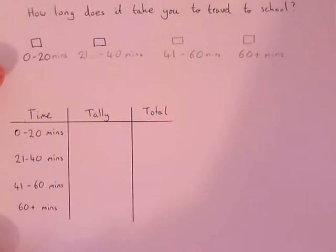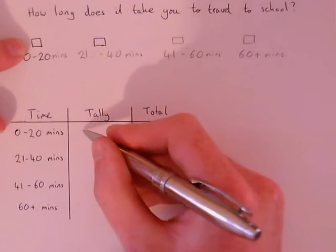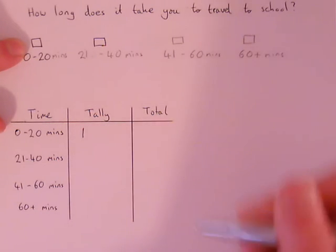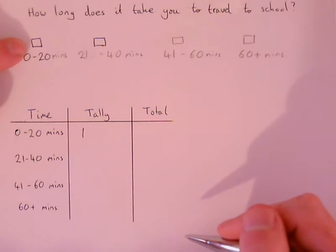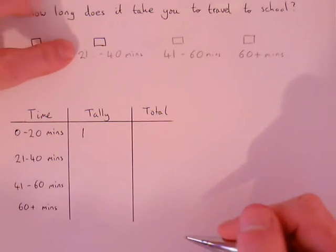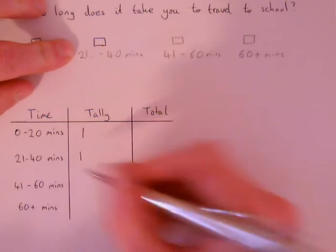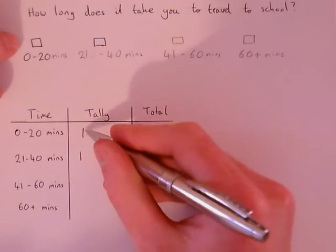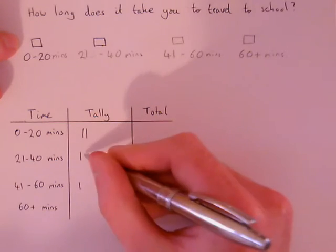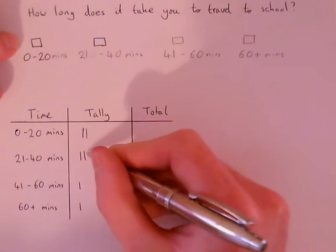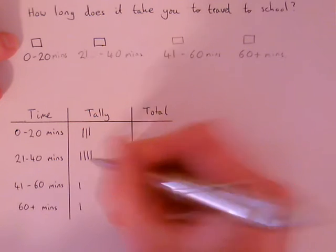So say the first questionnaire I pick up has a tick in 0 to 20. I'm going to put a tally, so just a vertical line in there. Say the next person had 21 to 40, I'd put one in there. The next person had 0 to 20, and so on. I'll just put a few in random places.